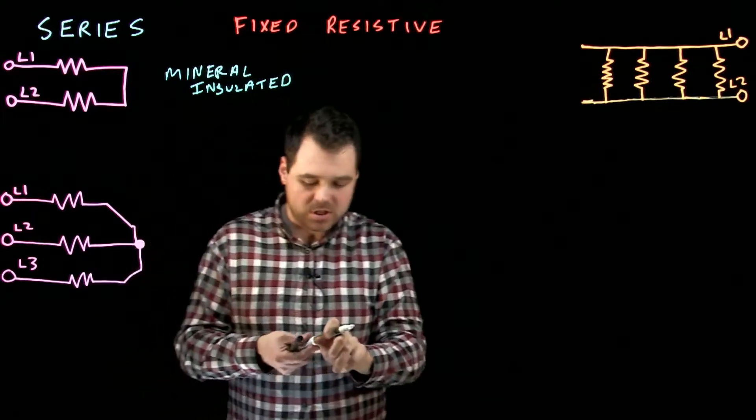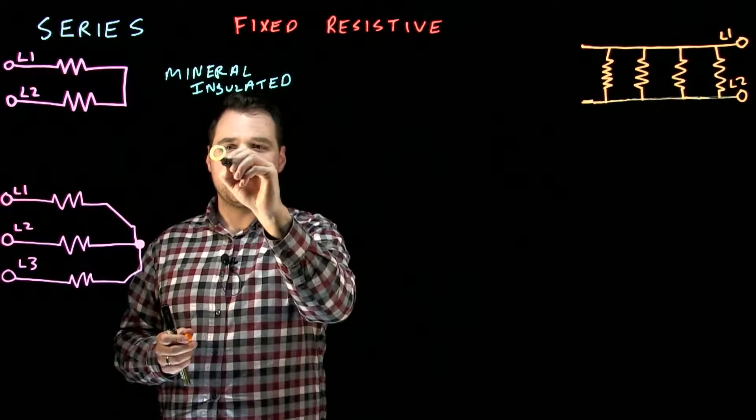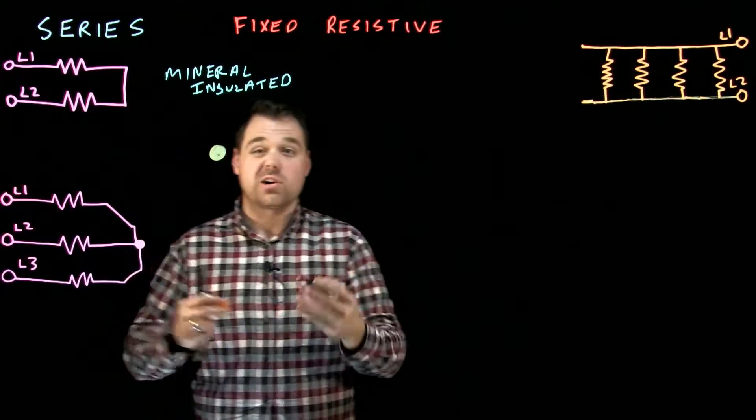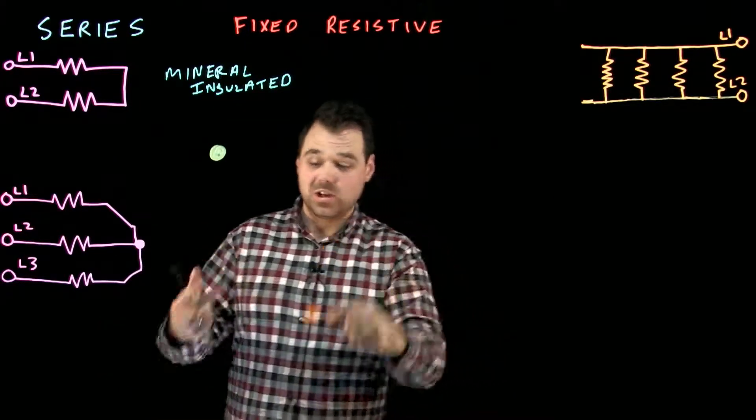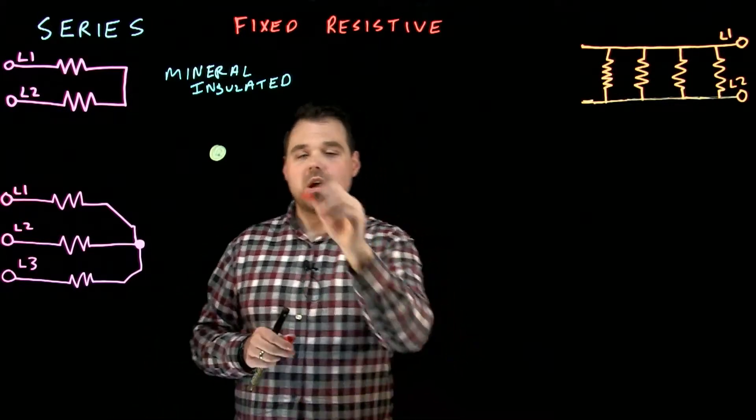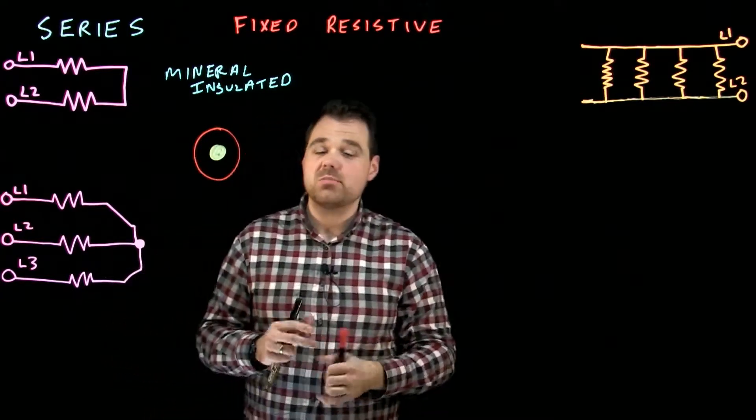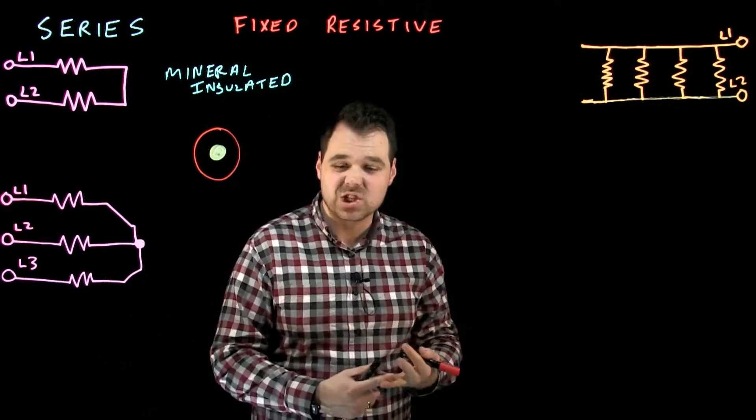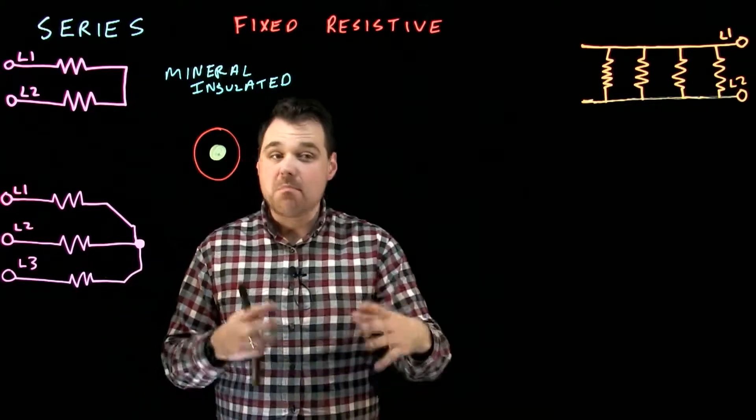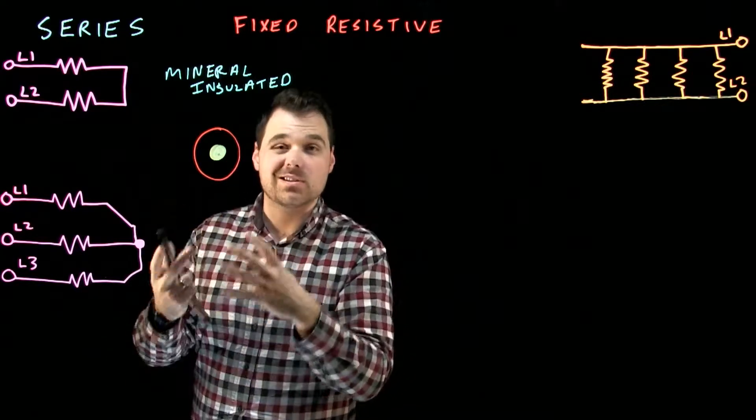So with a mineral insulated or an MI heat trace cable, there's a couple of things that are important. It is a conductor, a conductor that gets very hot. It's going to give off a lot of heat. And there is also a metal jacket around this MI cable. The metal jacket is usually made of copper or stainless steel. That metal jacket gives it the ability for this to actually get very, very hot, so that it's not going to melt.